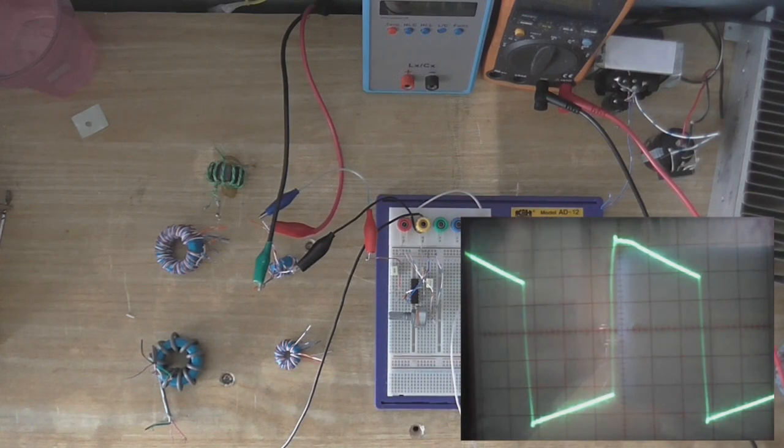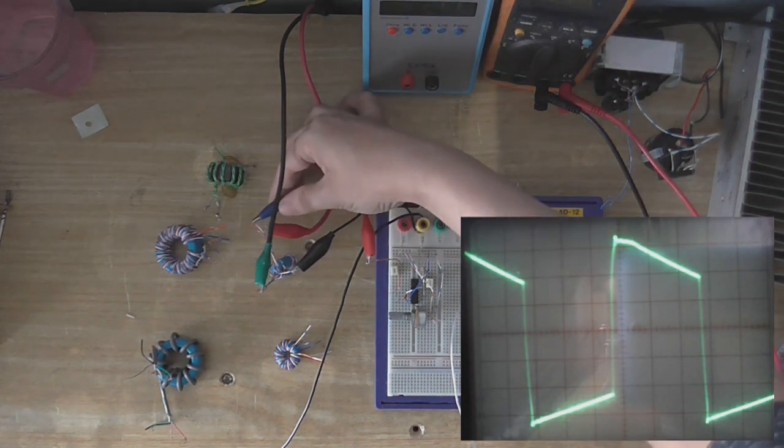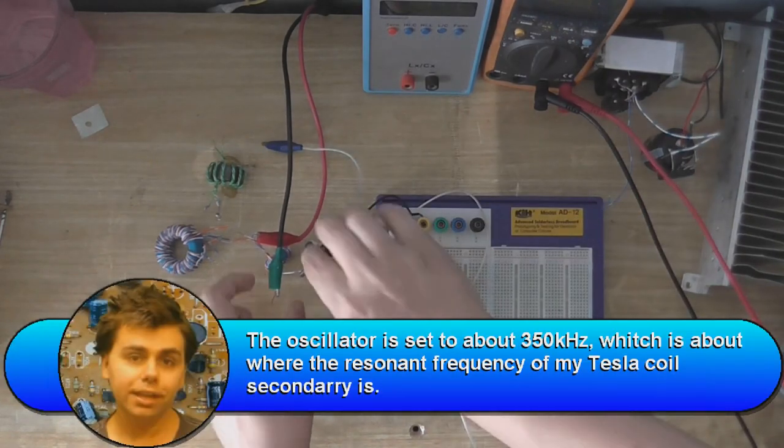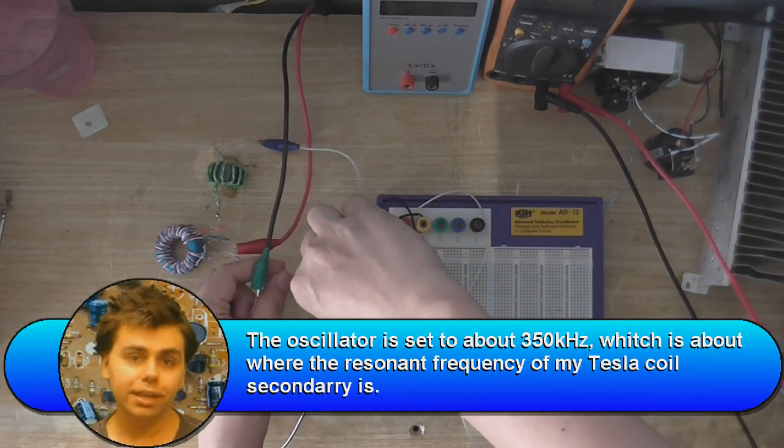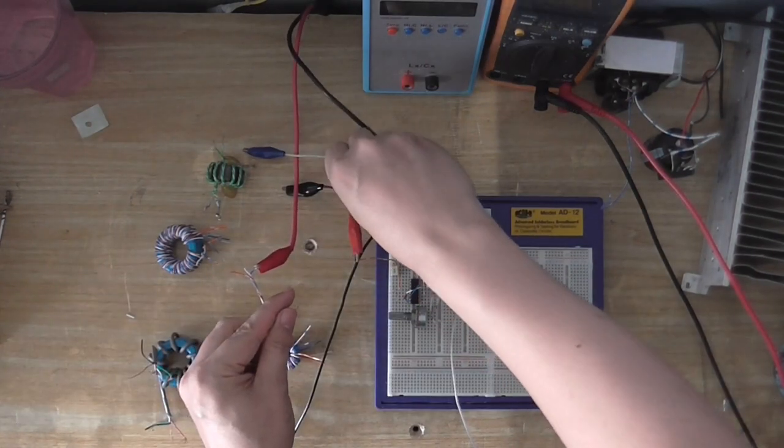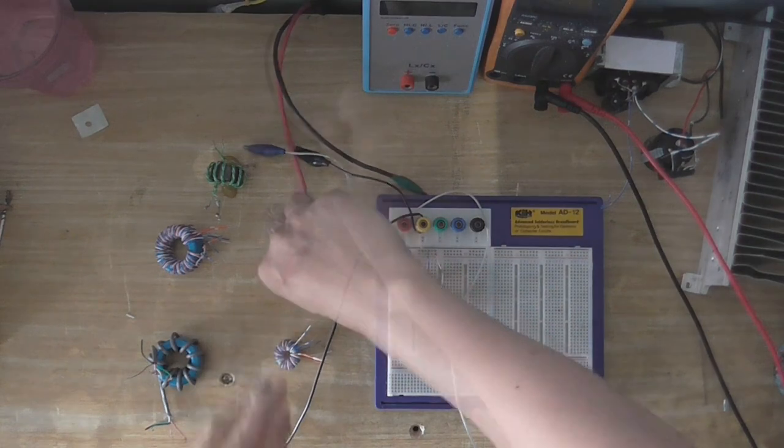And as you can see, we're getting a pretty nice square wave there. Yes, you can see a little bit of droop, but that's mainly because of the chip. It was never designed to drive a pulsed transformer directly. So you can expect that.